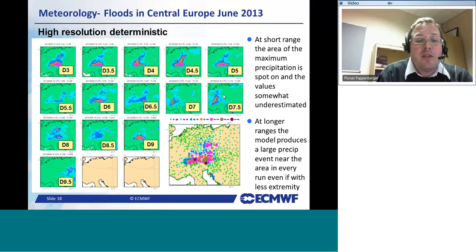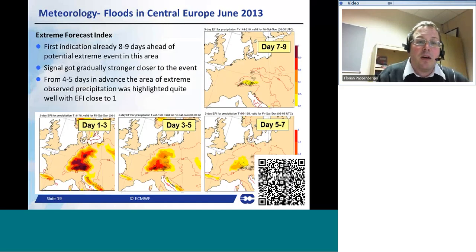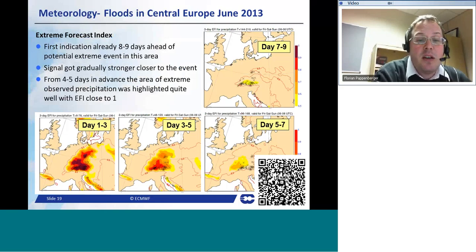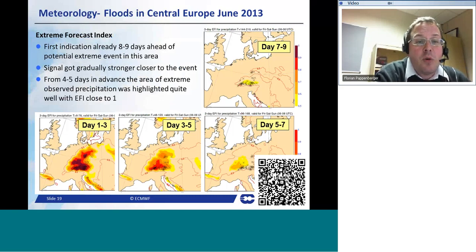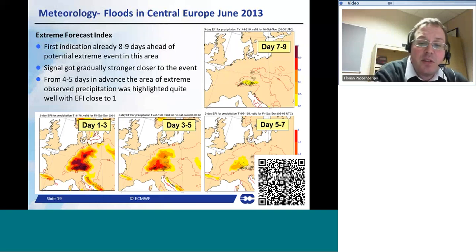The Extreme Forecast Index shows how extreme the event was compared to climate, starting at day 9 down to day 1. On days 7 to 9 the signal wasn't very strong, though the location was there. Days 5 to 7 the signal became a bit stronger, but the location was probably too far west. Days 3 to 5 and 1 to 3 it was very clearly visible that there was some really extreme precipitation coming. The forecast got gradually stronger the closer we got to the event.